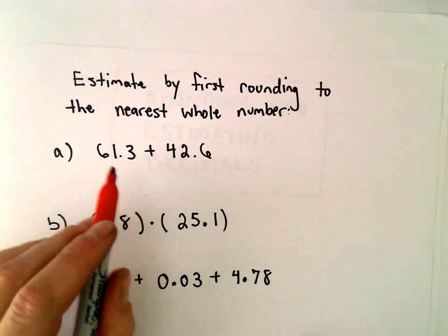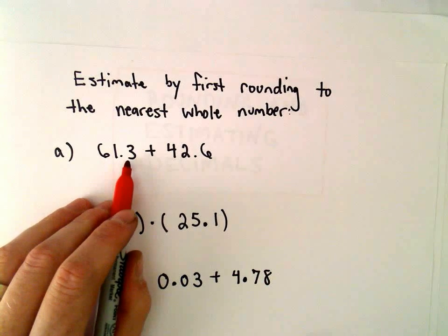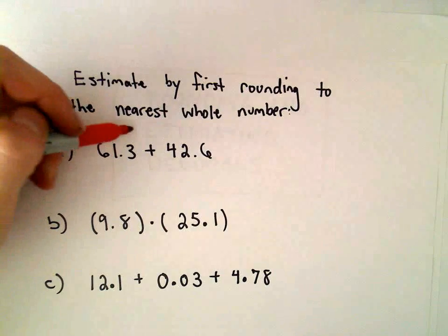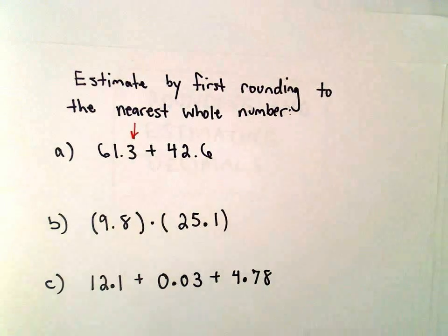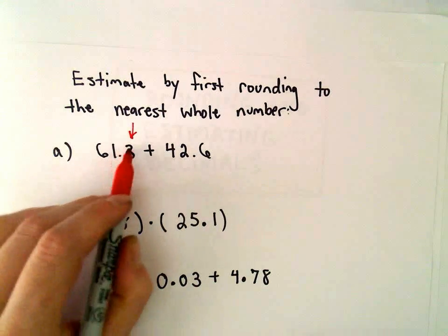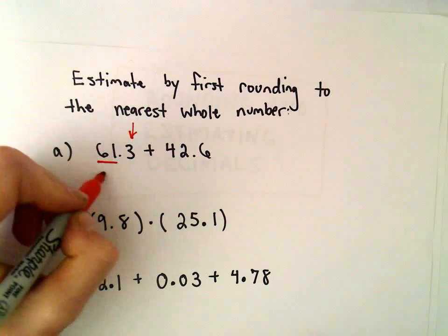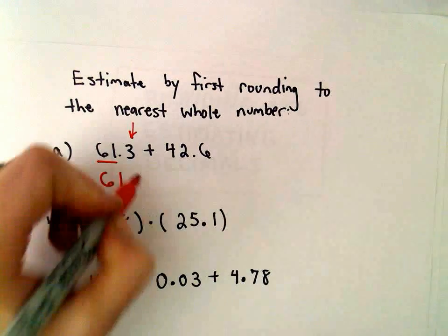And then you can get a close estimate. So let's round. So 61.3, we're going to round to the whole number. So our first number here is a 3. Since that's 4 or smaller, it says we're going to leave the number alone.